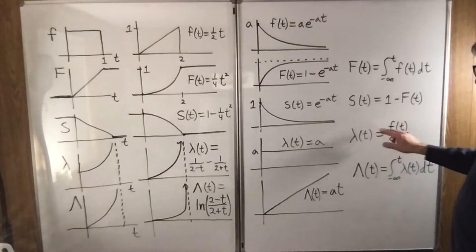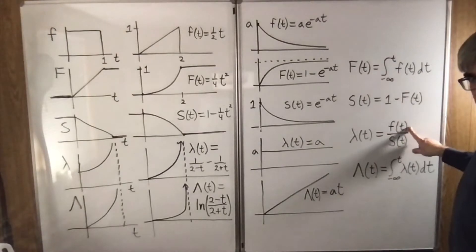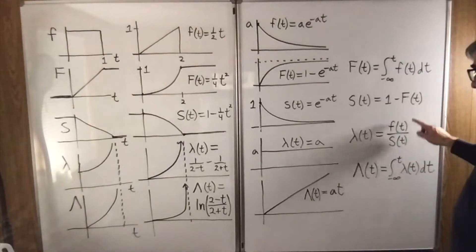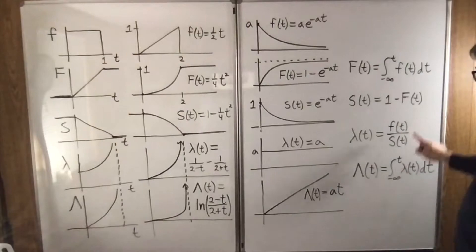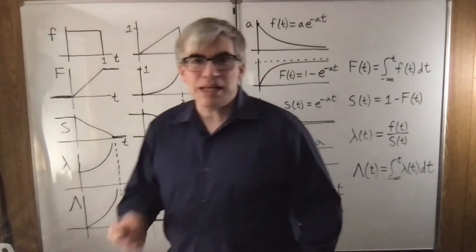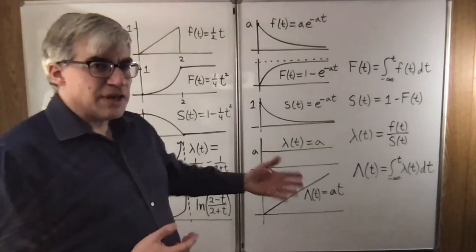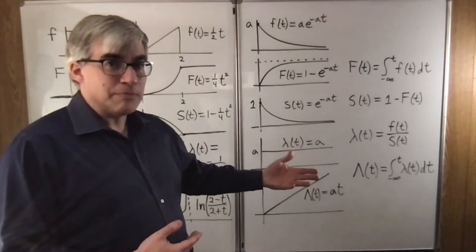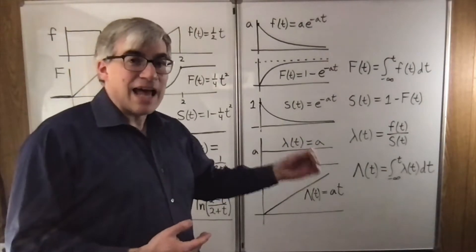The hazard function is like a probability density. It's in probability per time, but it isn't normalized because it's been divided by the survival function. In other words, lambda is how likely the event is per unit time, given that it hasn't yet happened.